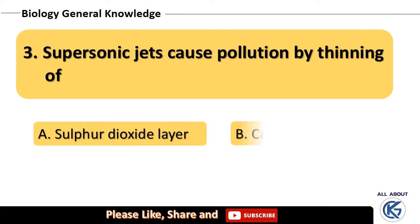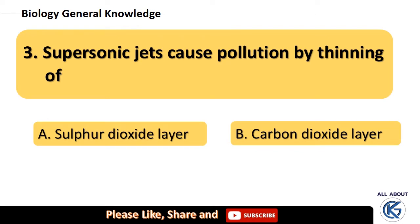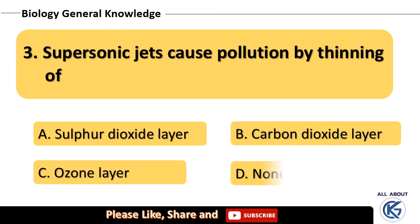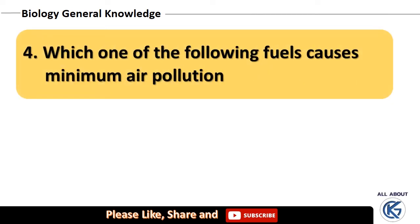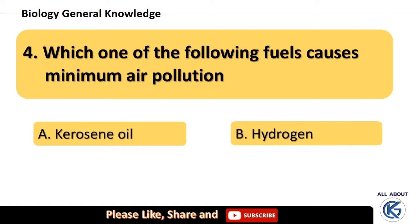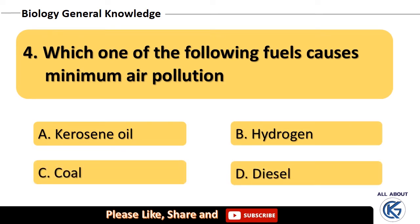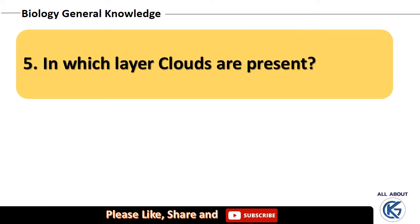Supersonic jets cause pollution by thinning of — sulfur dioxide layer, carbon dioxide layer, ozone layer, or none of these? The right answer is ozone layer. Which one of the following fuels causes minimum air pollution — kerosene oil, hydrogen, coal, or diesel? The right answer is hydrogen.